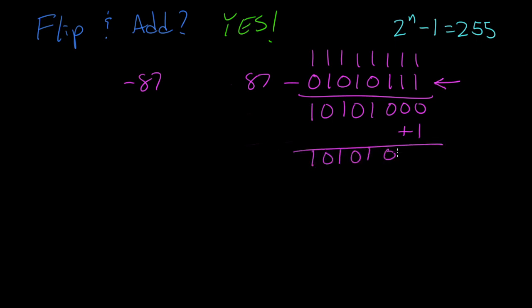1, 0, 1, 0, 1, 0, 0, 1. And this is our 2's complement for negative 87.